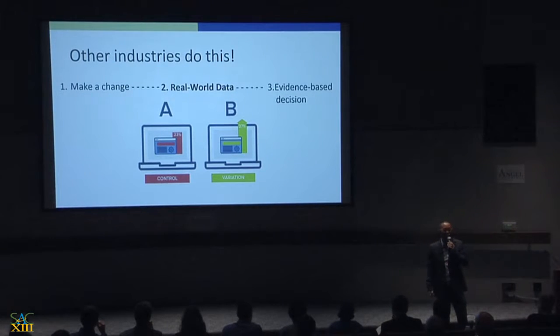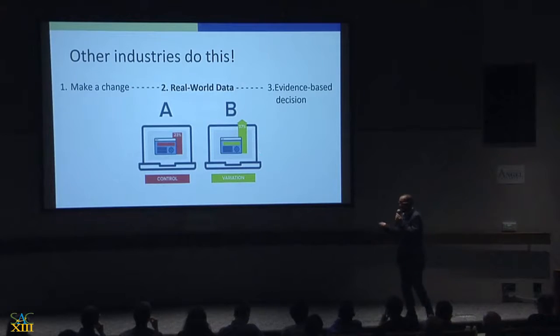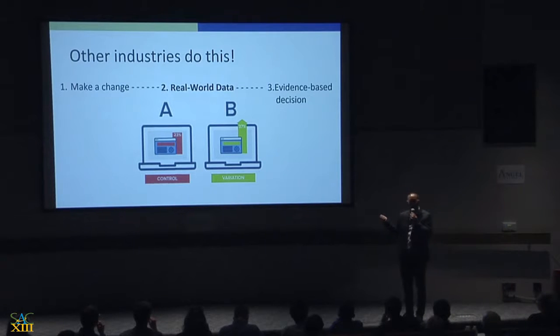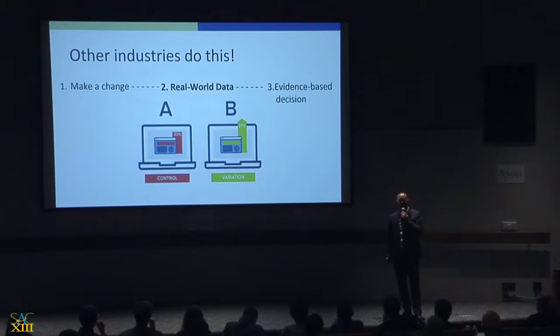How does everyone else do it? There are a whole bunch of people in tech in this room. For website optimization, Amazon would just make a change to their website — change it to green, for example — decide the metric for success: conversion, clicks, or time on site. If you get a positive uptick, they accept the change and move on. If it doesn't work, you know what doesn't work and move on. We want to bring the same concept of A/B split testing to clinical medicine using real-world data.